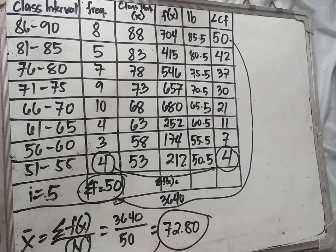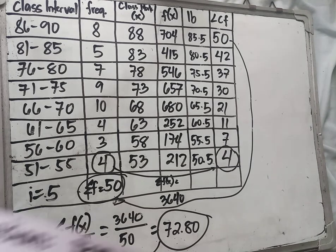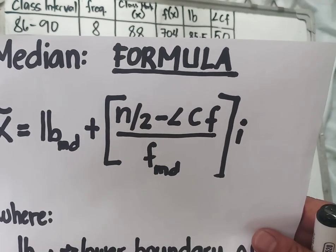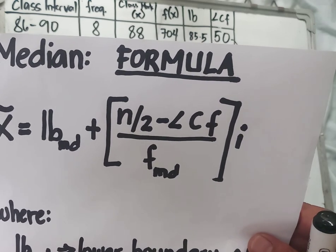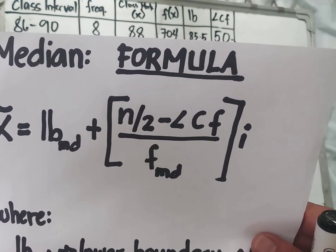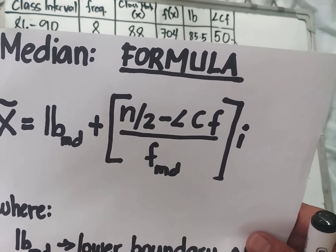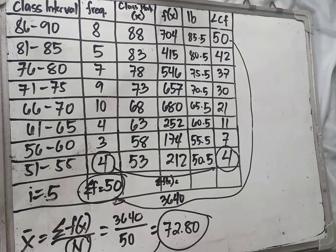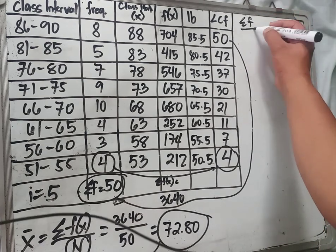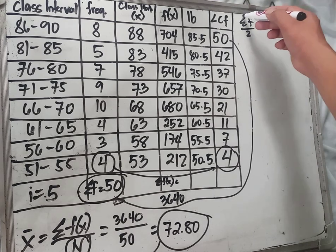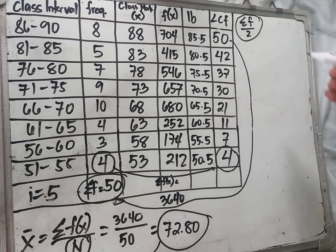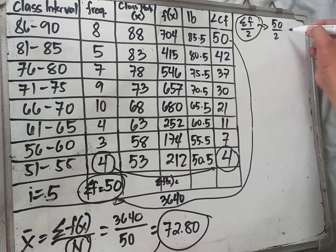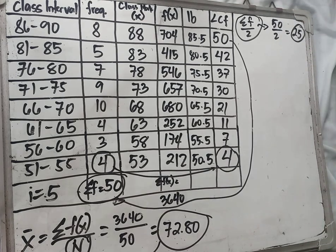Now we find the median. The formula is: Median equals the lower boundary of the median class, plus the quantity of n over 2 minus the less-than cumulative frequency, over the frequency of the median class, times i. The median class is the class where the cumulative frequency is greater than or equal to n over 2. Total frequency is 50, so n over 2 equals 25.